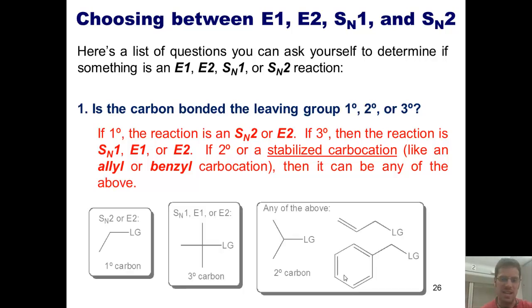All of this is summarized in this little figure I made myself. Leaving group stuck to primary carbon: SN2 or E2. Done. If it's stuck to tertiary, it can only be SN1, E1, or E2. And if it's any of these, then it could be any of the above.